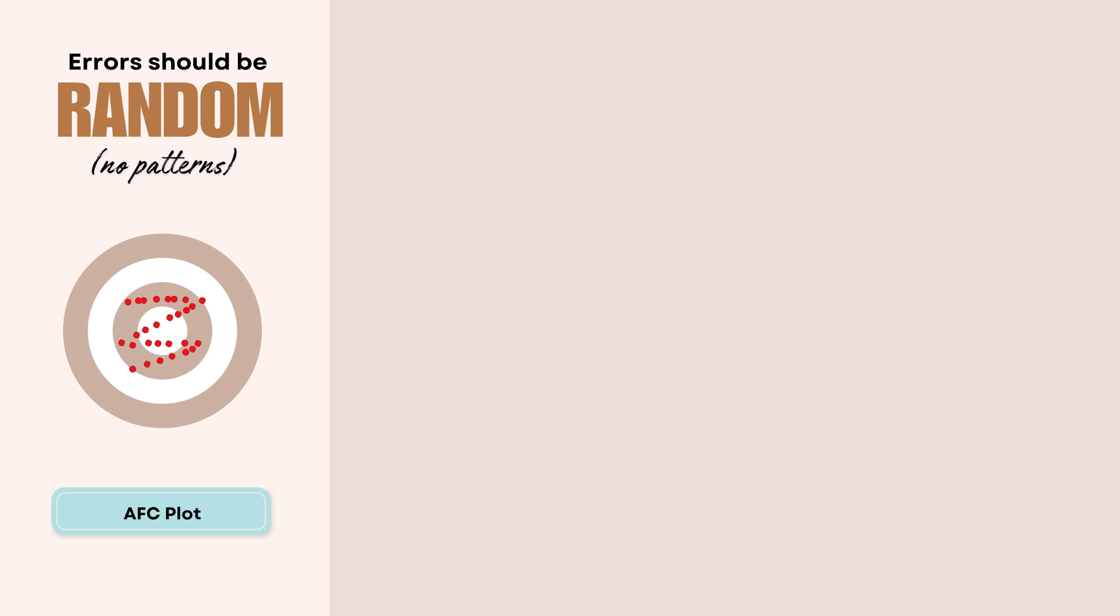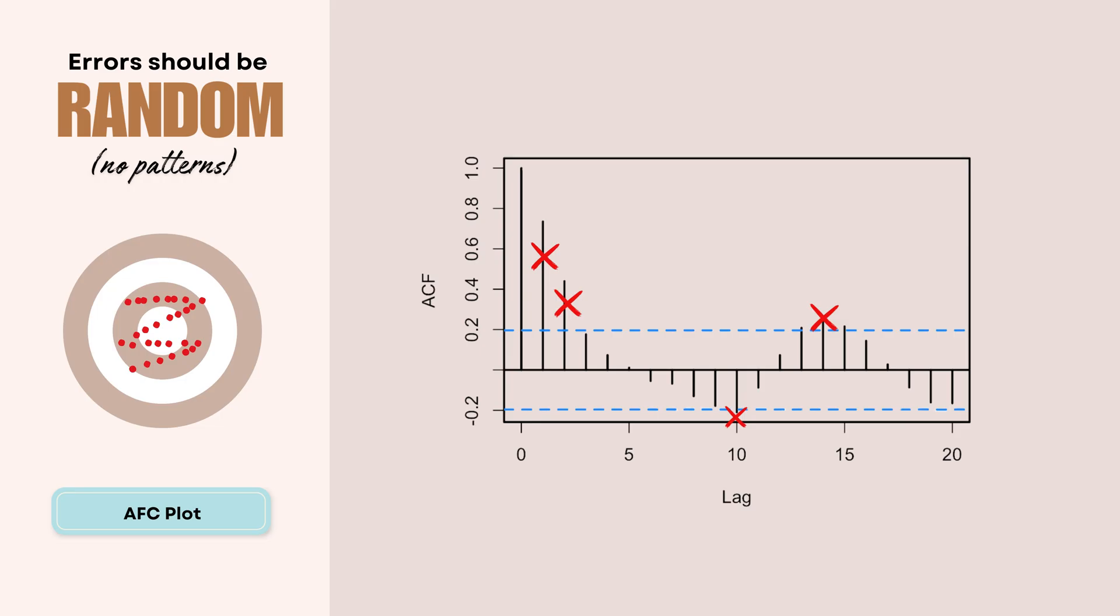For example, if errors are consistently positive, followed by a negative, then our model might be too slow to react to changes. Or if errors show a pattern every 12 months, then we're likely missing some seasonal effect. And these patterns are like your data trying to tell you, hey, there's still something that you could use to make better predictions. And a good forecasting model should extract all predictable patterns, leaving only random noise in the errors.